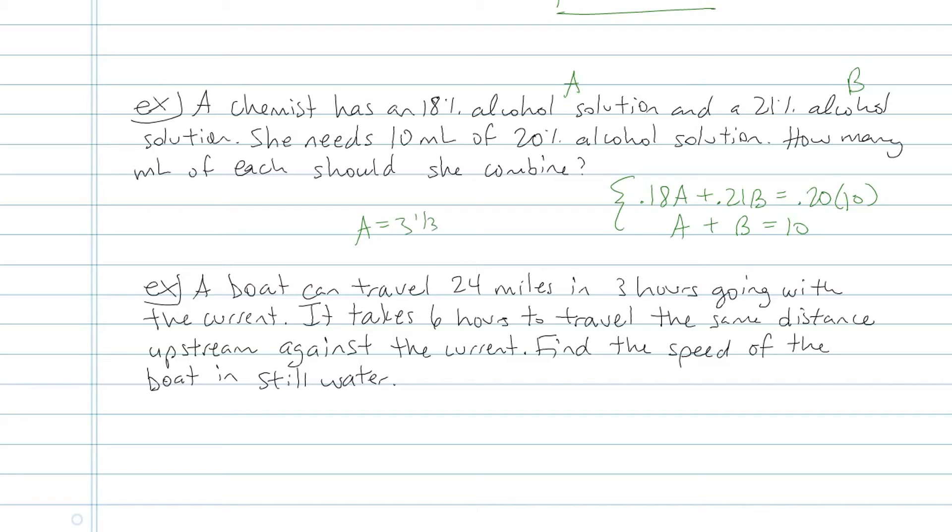Once I solve, I end up getting A is equal to 3 and 1/3 milliliter. B is equal to 6 and 2/3 milliliters. But don't leave it like that, because I arbitrarily called them A and B. You want to make sure you're connecting it back to the original problem. The 3 and 1/3 milliliter of 18%, and this one's of 21%. Don't just write it like A and B, because your reader doesn't necessarily know what A and B is, especially if I didn't write out the definition of my variables.